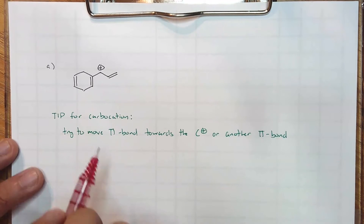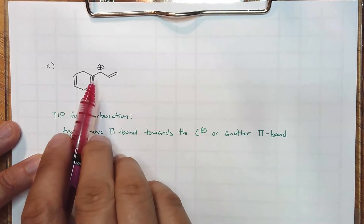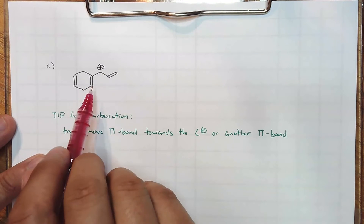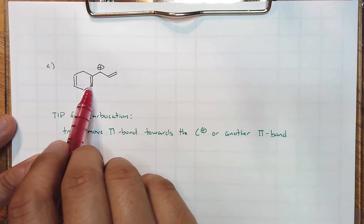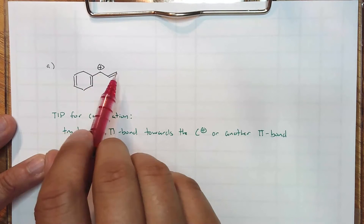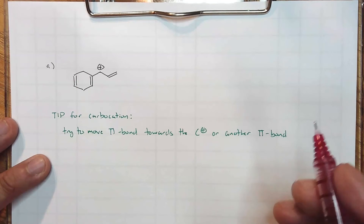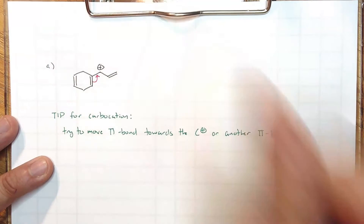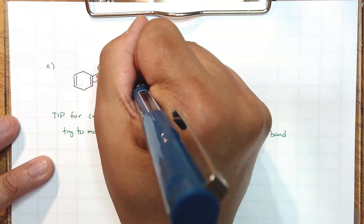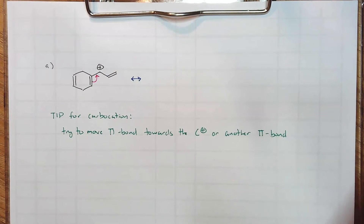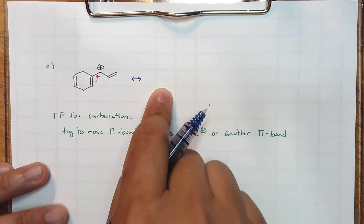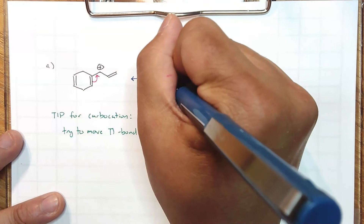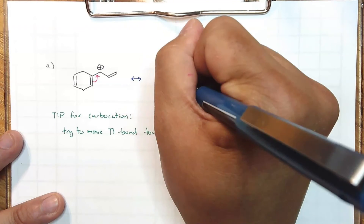Here's the idea: we have two pi bonds that are close to the carbocation — they're actually adjacent. I think half the class would choose to move this pi bond to the right, and the other half might choose this pi bond and move it to the left. Either one is fine. When you draw resonance structures, you have to give the reader a warning that you're drawing resonance structures — not identical structures, not rotated structures. You're drawing Lewis structures in which the electrons move and the atoms do not.